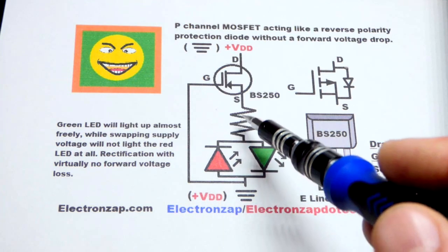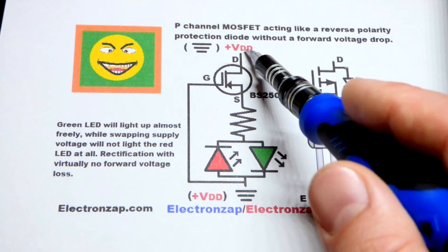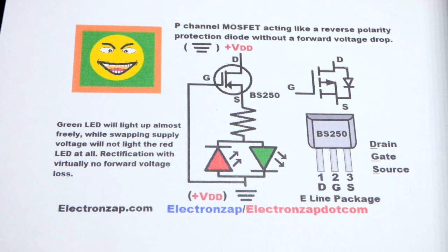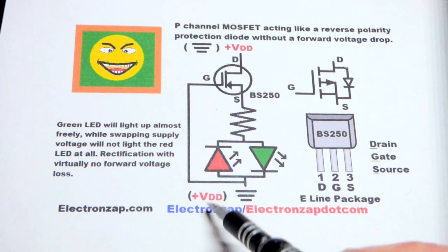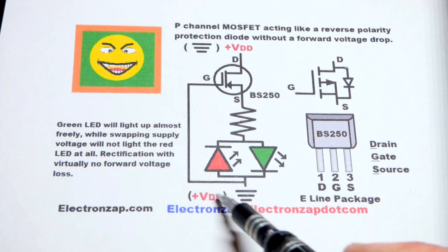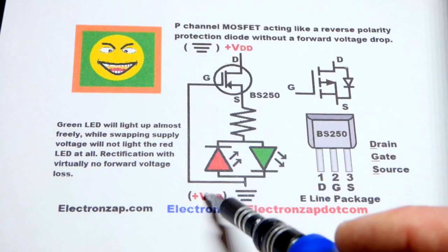I'm going to use 5 volts at the supply and 220 ohms at the resistor. We'll know this is wired up correctly when the red LED will not light up with the power supply in that direction, but the green LED will light up with the power supply in that direction.